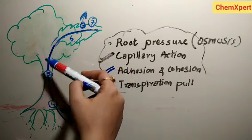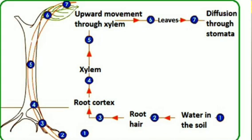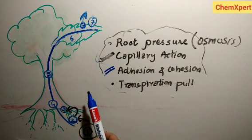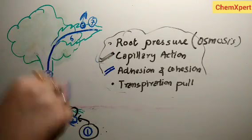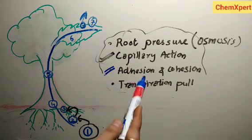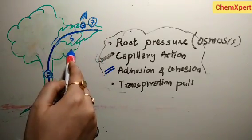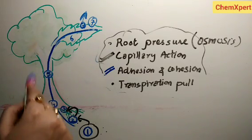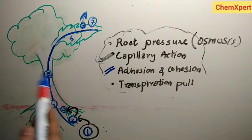It is the transpiration pull that takes water to high heights. Root pressure and adhesion-cohesion work in the root section and xylem column, but towards the leaves, the transpiration pull plays the major role. Transpiration also helps in absorption and upward movement of water and dissolved minerals from roots to the leaves, and it also helps in temperature regulation through evaporative cooling. The transpiration pull operates during the day, while root pressure is the major driving force at night.